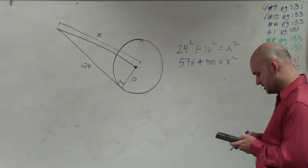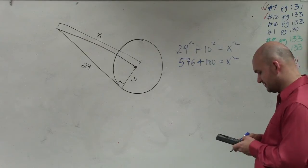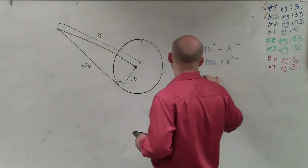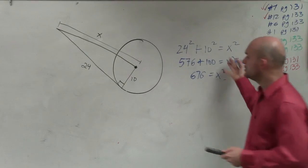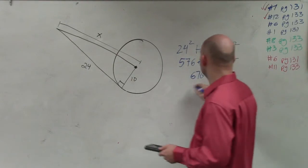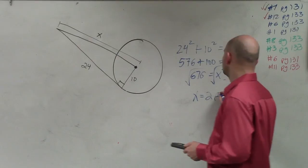So therefore, square root of 676 is 26. So I have 676 equals x squared. To solve for x, I take the square root of both sides. x equals 26.